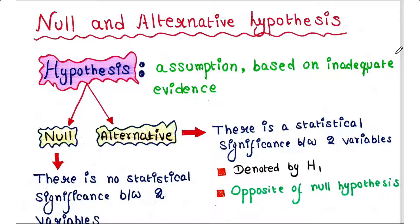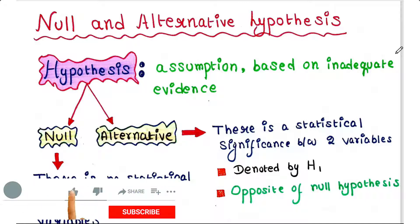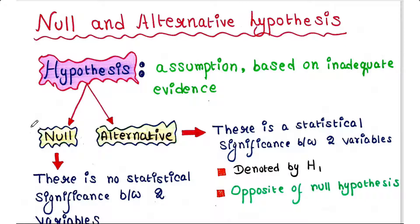Hey guys, this is Malinki, welcome back to my channel Voice of Malinki. Today we will talk about null and alternative hypothesis. In statistics, a hypothesis is defined as an assumption that is based on inadequate evidence. Suppose we want to prove something but we still don't have enough proof, then we can assume something — that is called our hypothesis. There are two types of hypothesis: null hypothesis and alternative hypothesis.